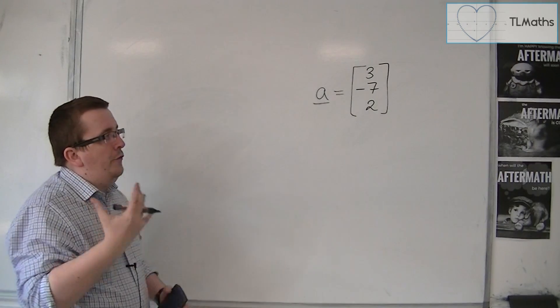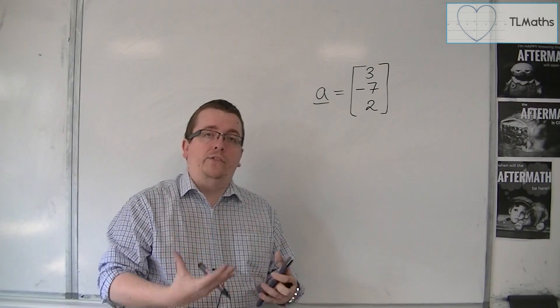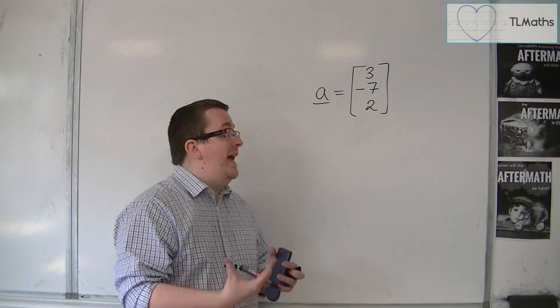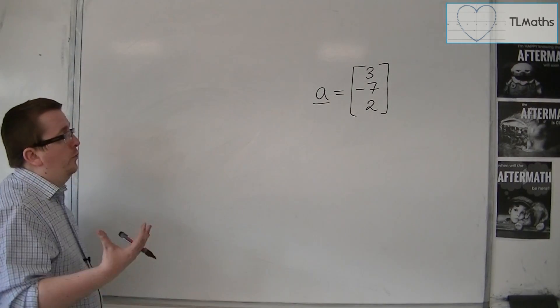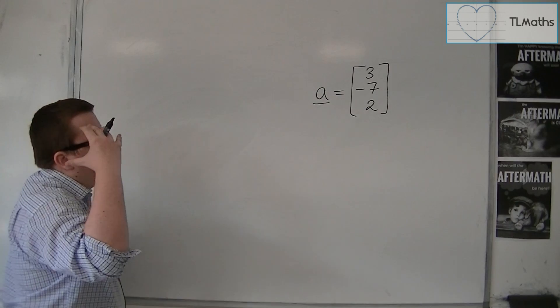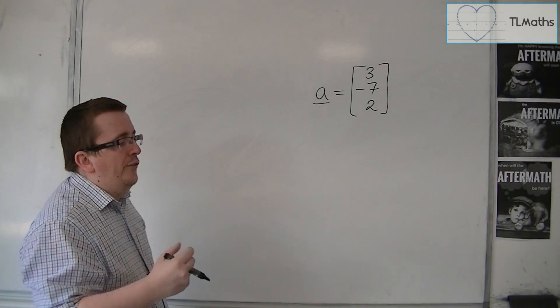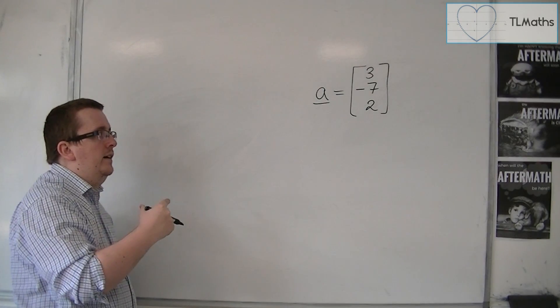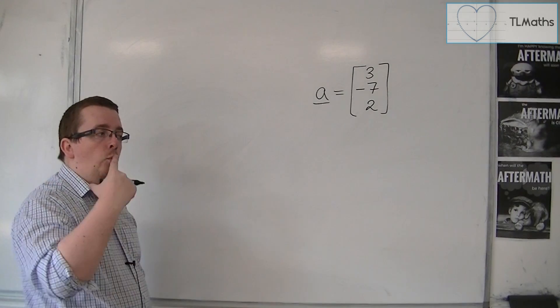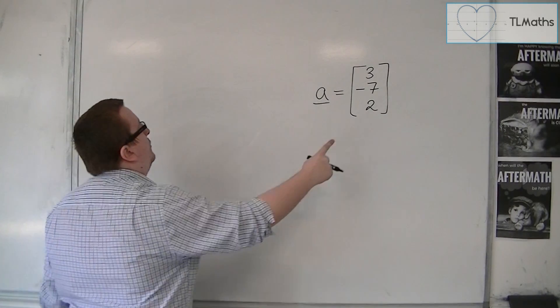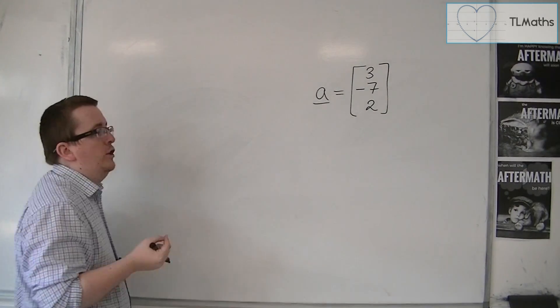And this vector, as we know, has a particular magnitude. It has a length that goes with it. But let's say that I want to find a vector that has length 1 that goes in exactly the same direction.